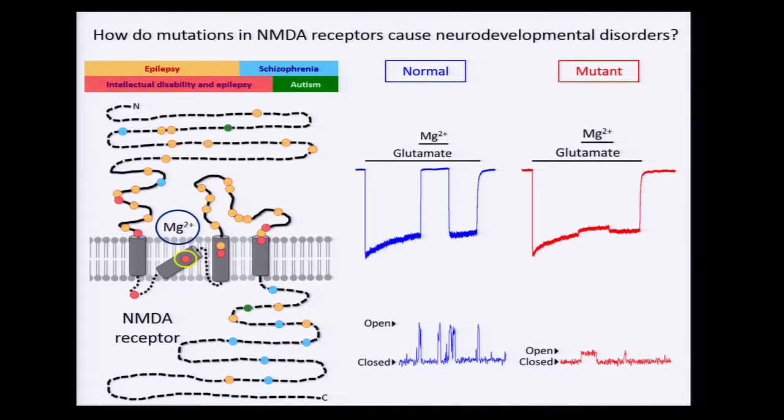Recently, the NMDA receptor has been found to be mutated in people with a range of neurodevelopmental disorders, such as autism and schizophrenia. Each dot on this receptor diagram is a mutation coloured by associated disorder.